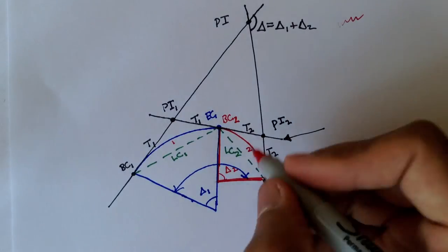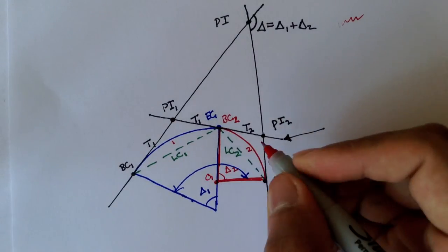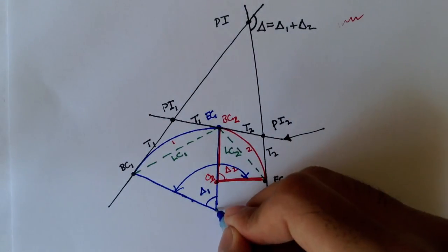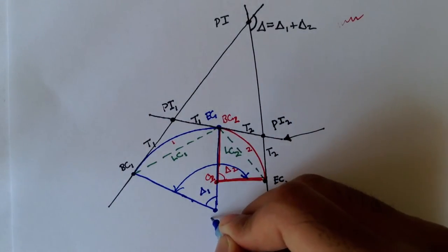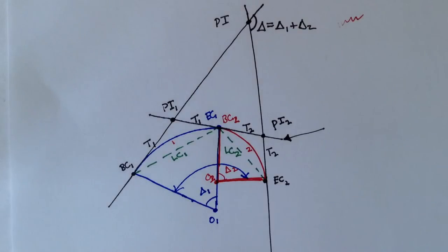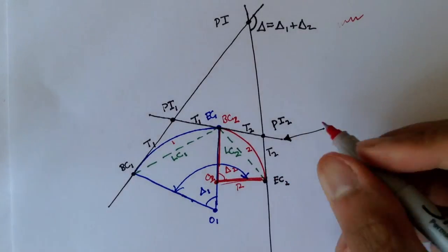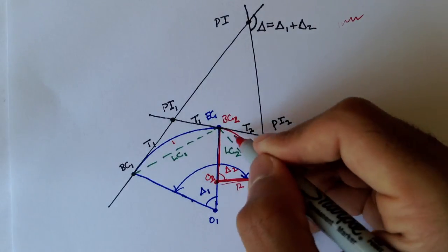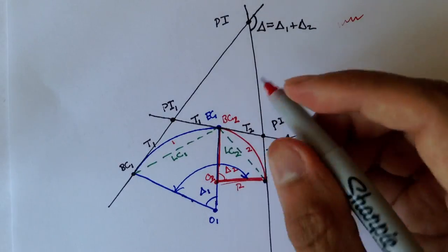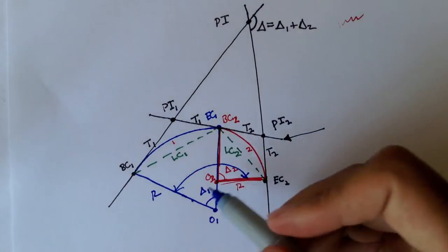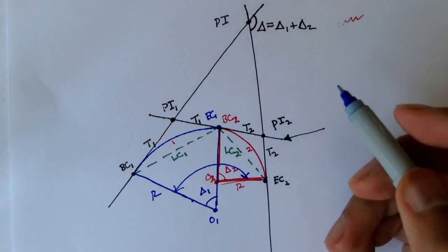Here you have origin 2 for the red curve and origin 1 for the blue curve. That means this red distance is the radius of the red curve, and this is also the radius of the blue curve.